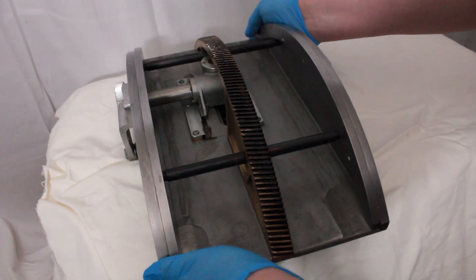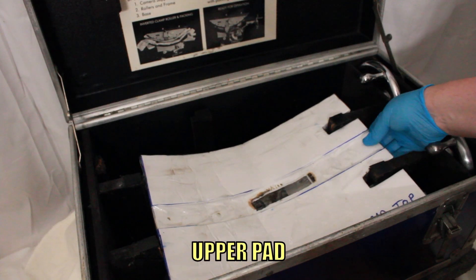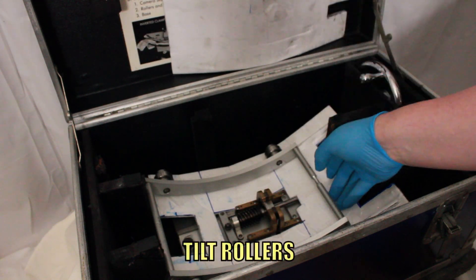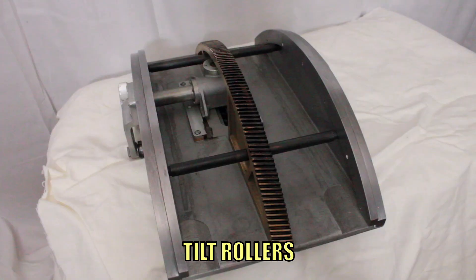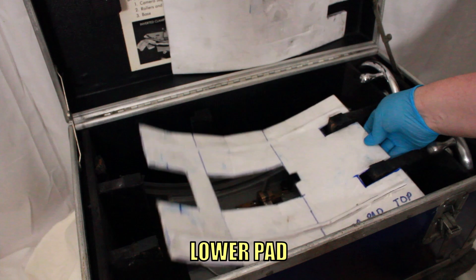Remove the tilt gear and set aside. Remove upper pad. Remove tilt rollers and set aside. Remove lower pad.